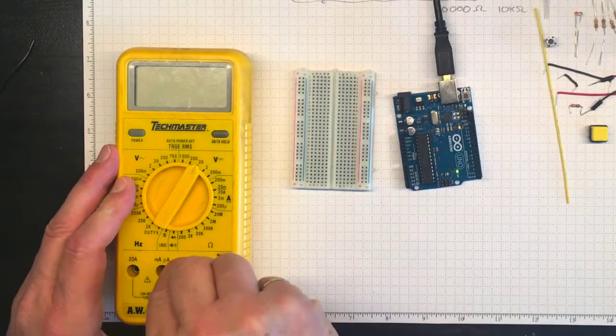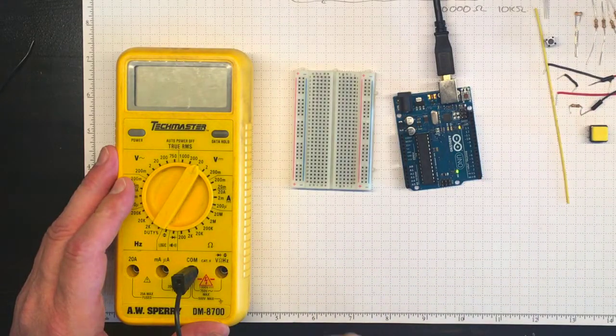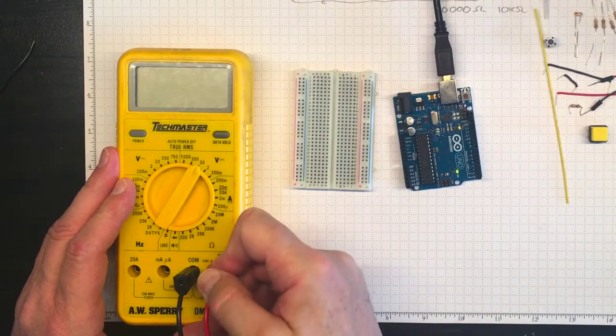On the multimeter I'm always going to plug the black lead into common and I'll plug the red lead into this socket for voltage, resistance, and continuity measurements.